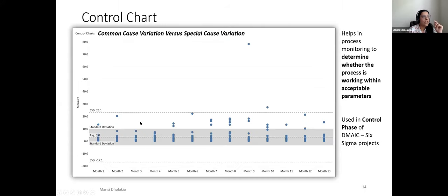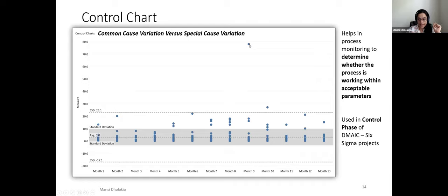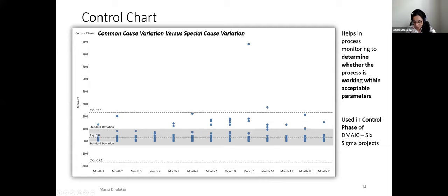Control charts help identify common cause versus special cause variation. If a data point is about three standard deviations from the mean — beyond the upper or lower control limit — something special or different is happening and needs investigation. This determines whether a process is working within acceptable parameter limits, and is useful in the control phase of Six Sigma projects.